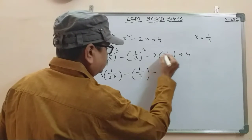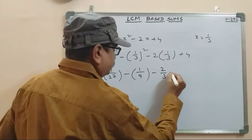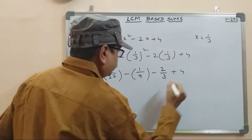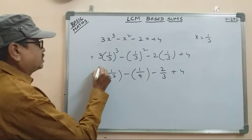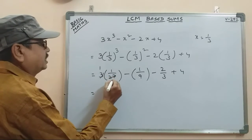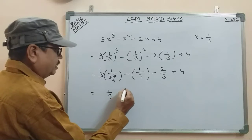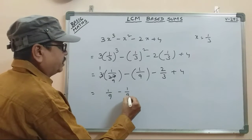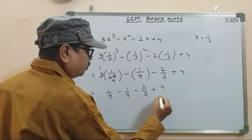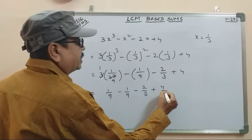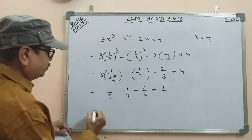Minus 2 into 1 by 3 is 2 by 3. Plus 4. 3 table cancel: 3, 1, 3, 9. 1 by 9 minus 1 by 9 minus 2 by 3 plus 4. 4 and 1 by 1 is...